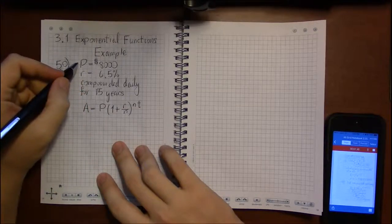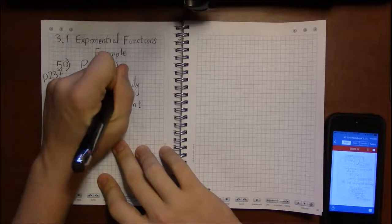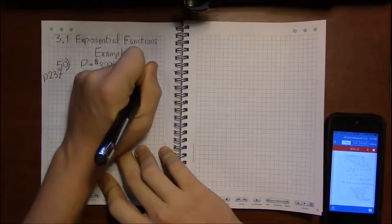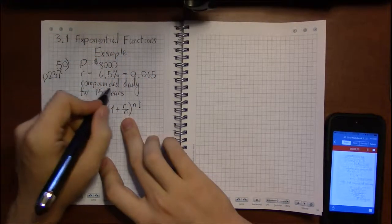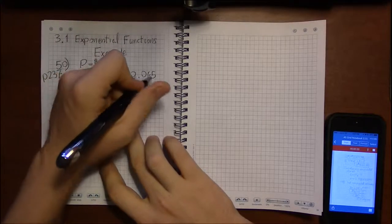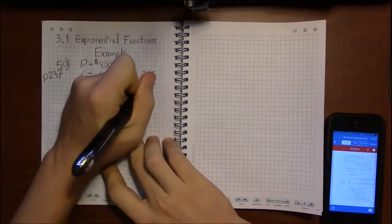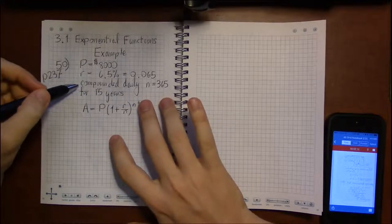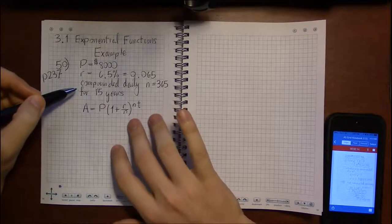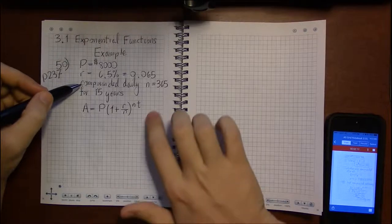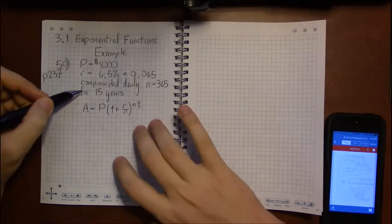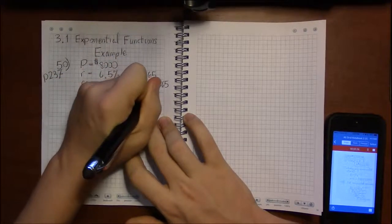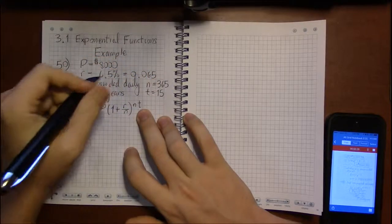And they've told us what P is equal to, what r is equal to, so long as we convert it to its decimal form, 0.065. n is the number of times you compound, so if we're compounding daily you could take n to be 365. If you try to do 365 and a quarter or something like that to account for leap year, it'll make a small difference and won't make a very big impact in the final answer. And t is the amount of time in years that you're leaving the account to mature.